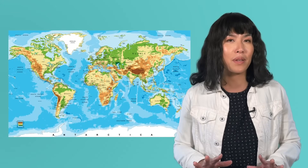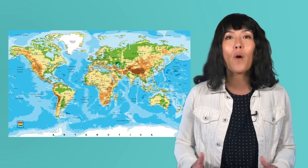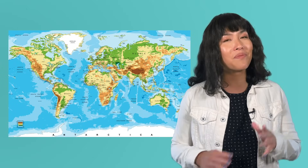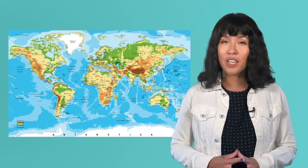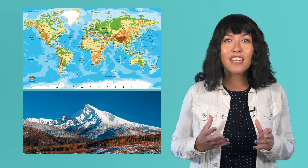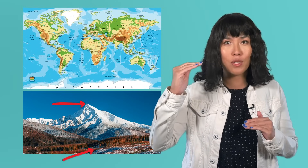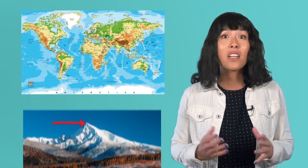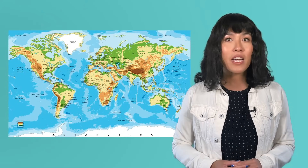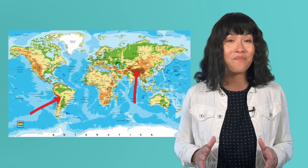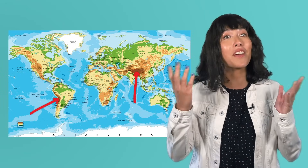The main purpose of a relief map is to show elevation, or the height of a landform compared to sea level. In geography, relief means the difference in elevation between a location's highest and lowest points. When looking at a relief map, you might notice that some areas are shaded in darker colors than others, like here and here. Relief maps use these different colors to show elevation.